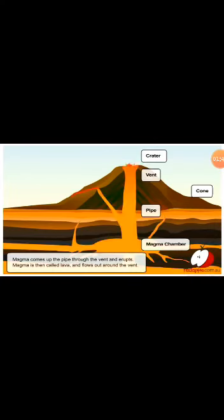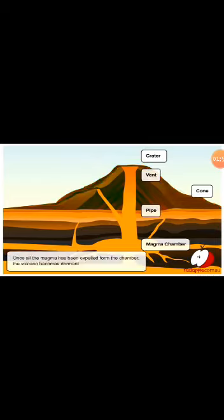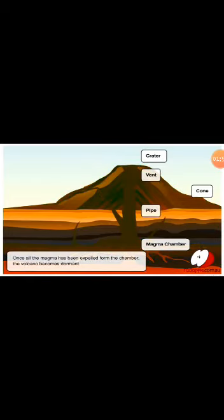Magma is then called lava and flows out around the vent. Eventually it hardens, making the volcano a little bigger. Once all the magma has been expelled from the chamber, the volcano becomes dormant.